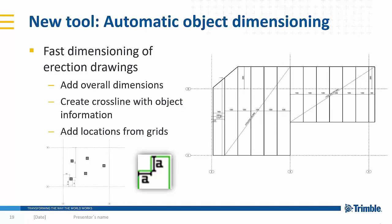We will have a new tool called automatic object dimensioning. It basically creates the transverse and longitudinal dimensions automatically. It's a really good tool, for example, when you're creating erection drawings. In this example on the right side, you can see that the hollow core slabs have been dimensioned.